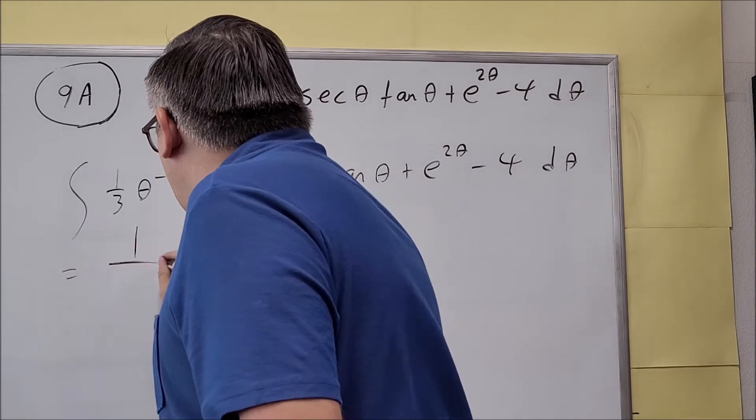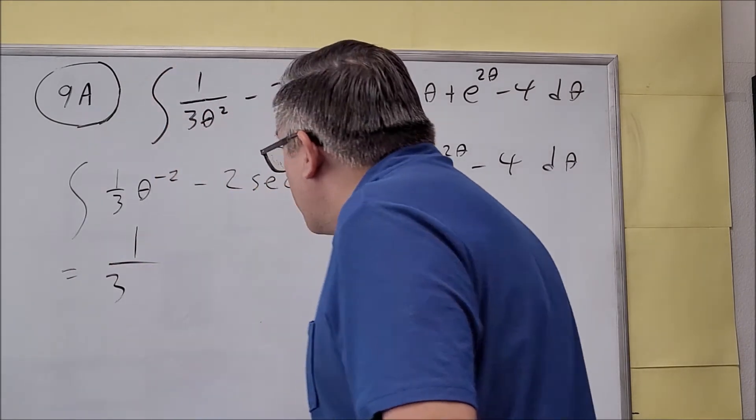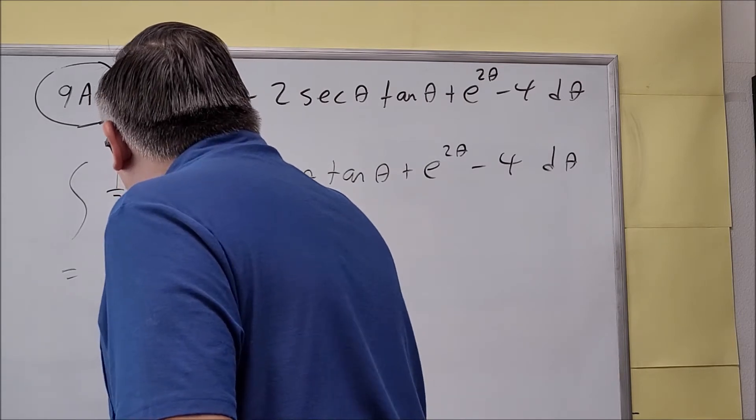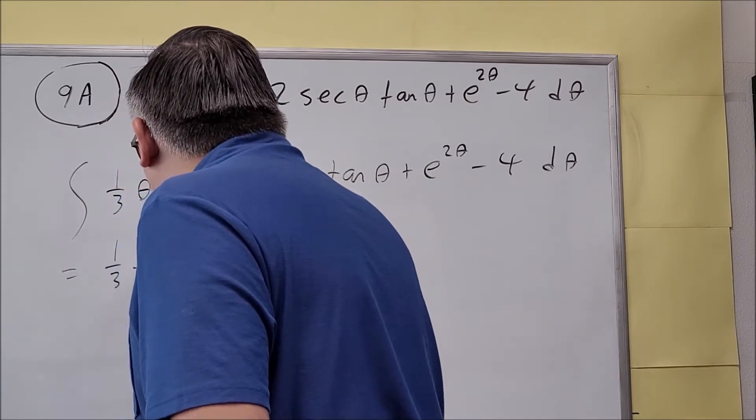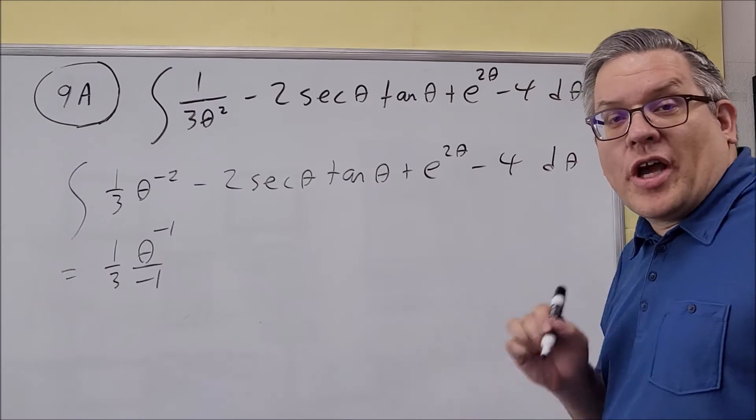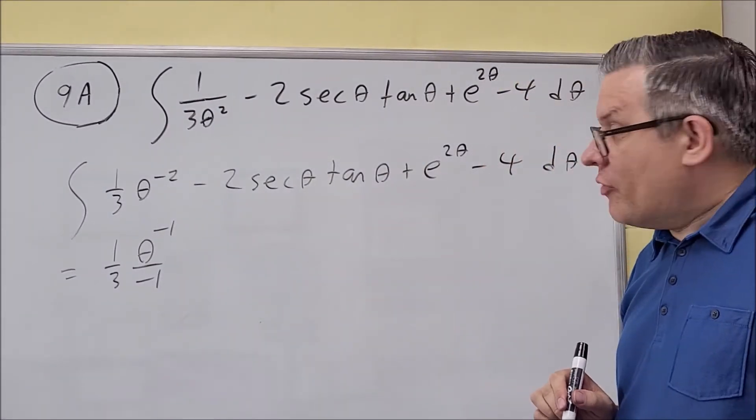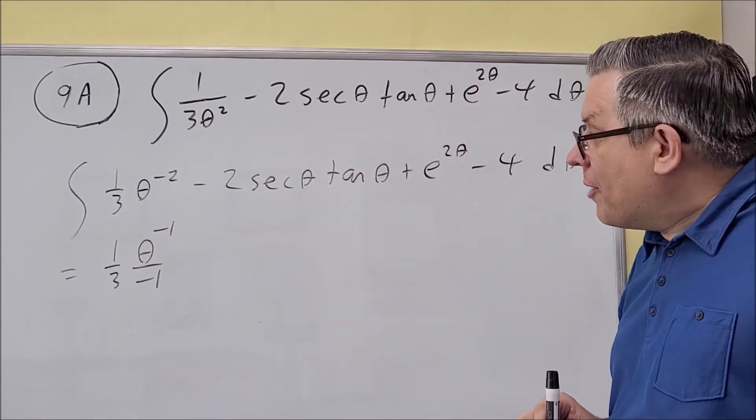So that's going to be 1 over 3, we'll get 1/3, we're going to raise the power by 1, and divide by the new power. So negative 2 plus 1 is negative 1, we divide that by negative 1. The 1/3, you can just leave that out front when you do that.